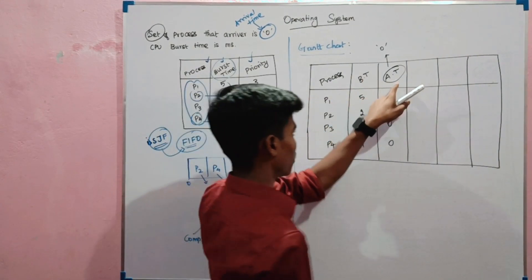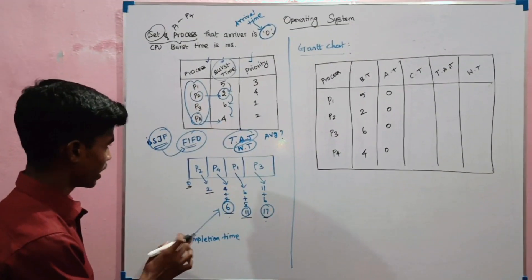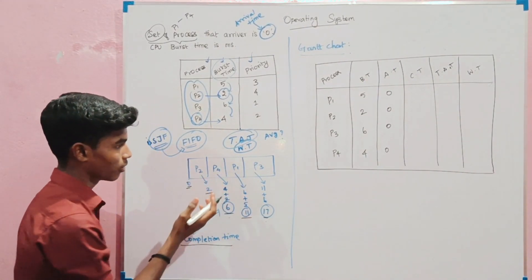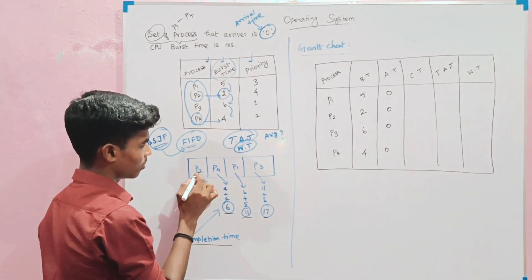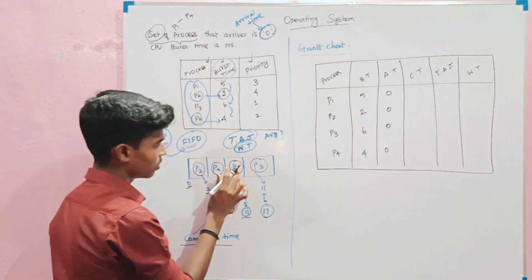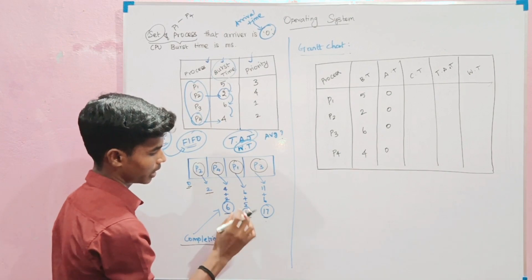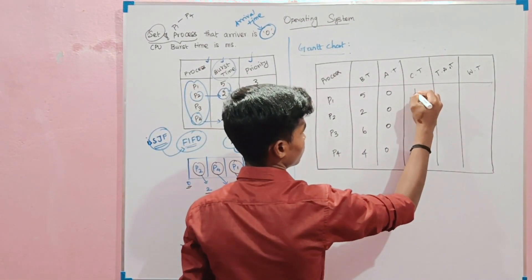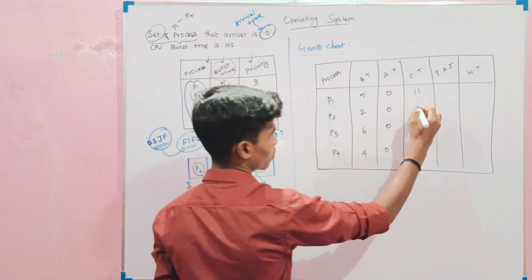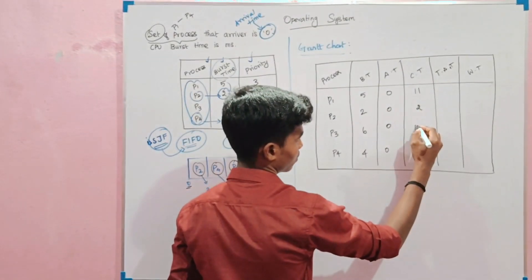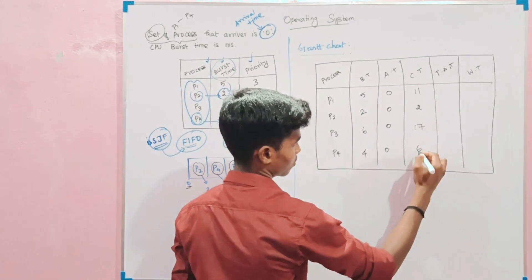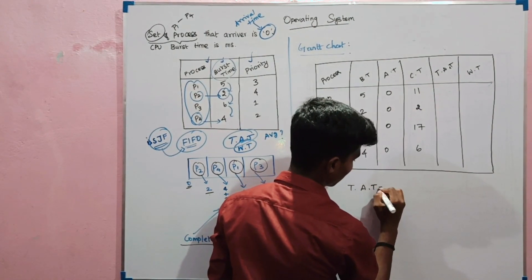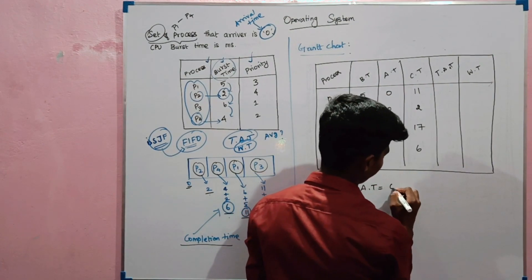We need to find the completion time (CT). The SJF order for the processes is: P2, P4, P1, P3. Now, the formula: turnaround time (TAT) equals completion time minus arrival time, i.e., CT minus AT.